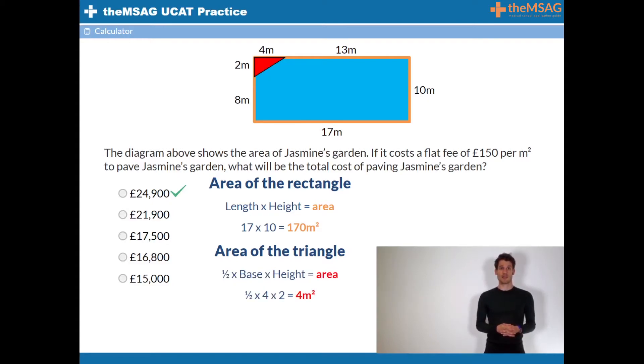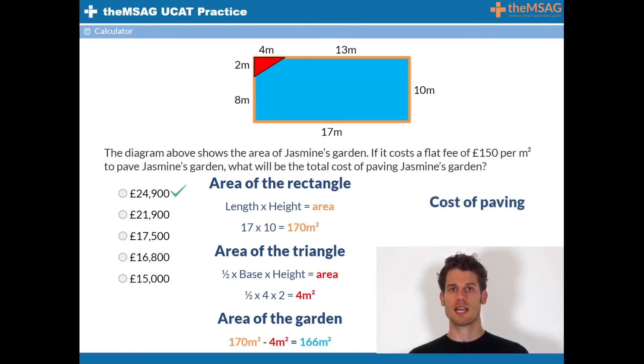The area of the triangle is half times base times height, which equals half times 4 times 2, which therefore is 4 meters squared. Therefore the area of the garden is 170 meters squared minus 4 meters squared, giving you 166 meters squared. 166 times 150, the cost per meter square of paving, equals £24,900.